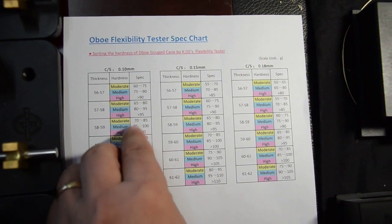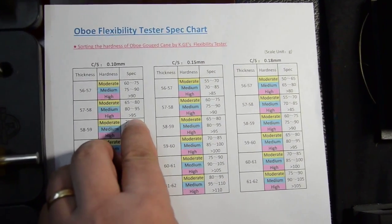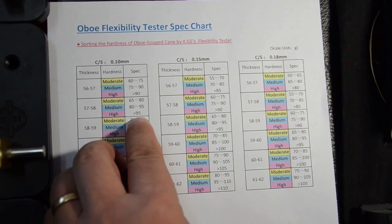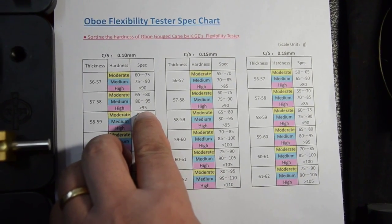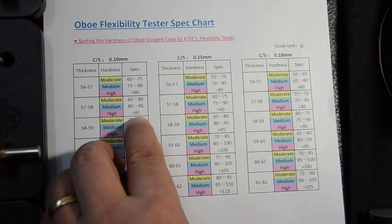That's quite a soft piece of cane. So if we're above 95, then it's a hard piece of cane. And quite many professional players prefer the very hard cane.